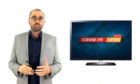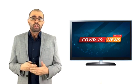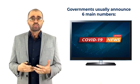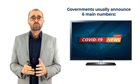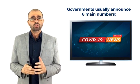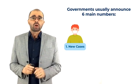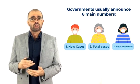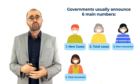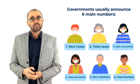Every day we wake up and check COVID-19 updates, and different governments usually announce many numbers. But six main numbers are usually announced every day: new cases, total cases, new recoveries and total recoveries, new fatalities and total fatalities.